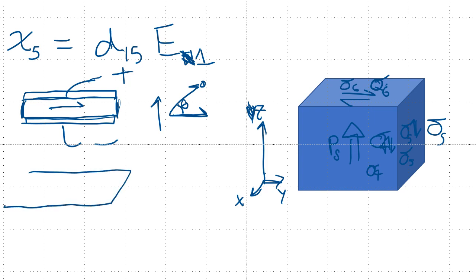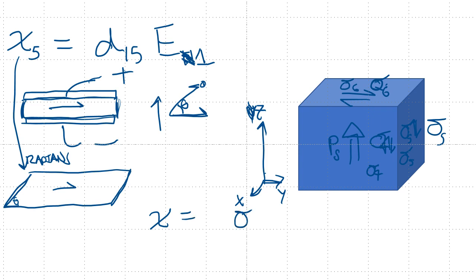Thus we now have shear — looking like this. We now have a shear strain whose angle, in radians, is our shear strain. The strain is related to the stress — we apply a stress in the five-direction. There will be practically no stress, because the electric field creates a stress which causes this shape to occur, then relieves all the stress. As we discussed earlier, whenever you apply an electric field the no-stress state of the piezoelectric material changes.